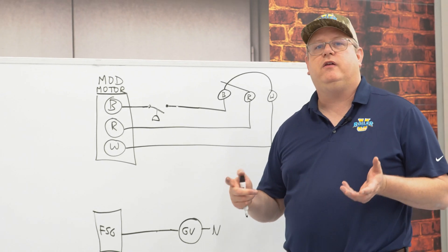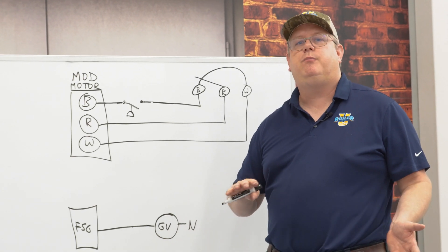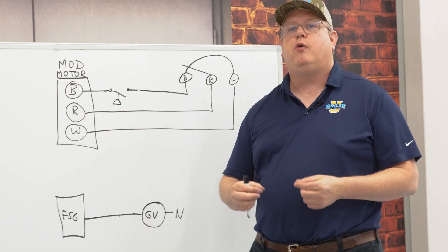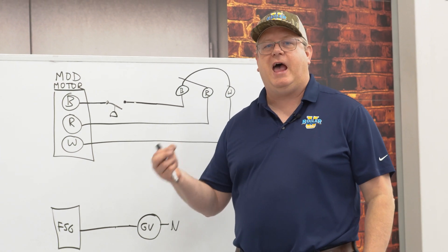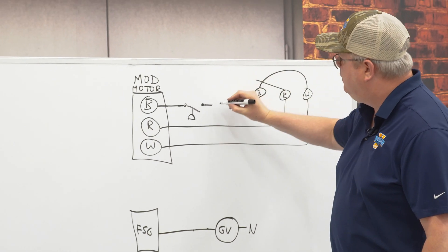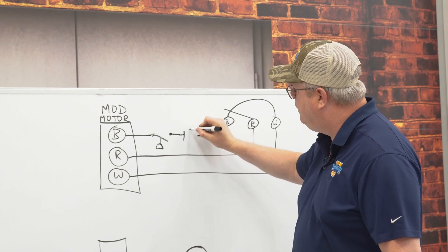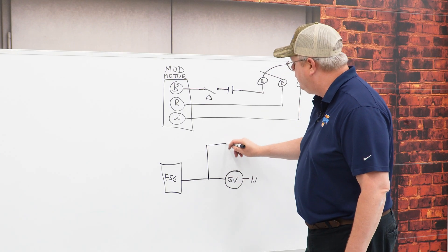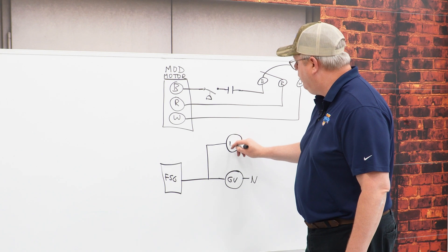Now, if I've got a boiler that cycles a lot and I want to prevent it from going to high fire or out of low fire for a duration, it's simple to add that to our firing rate limit circuit. Essentially, we just add an additional contact via relay and we can come off the flame safeguard control to the coil for that relay.